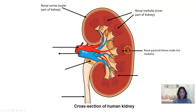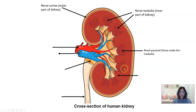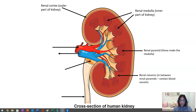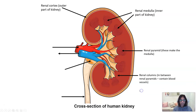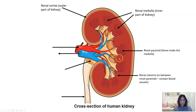These little pyramid-shaped structures are called renal pyramids, and each of these renal pyramids together comprise the renal medulla. In between the renal pyramids we have column structures, hence the name renal columns. These contain many, many blood vessels and that's what gives the renal medulla its dark red colour.